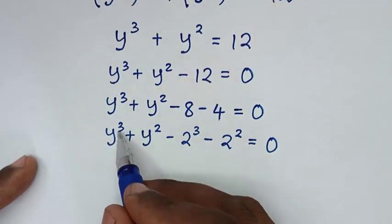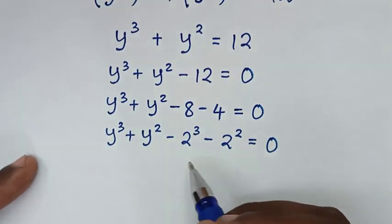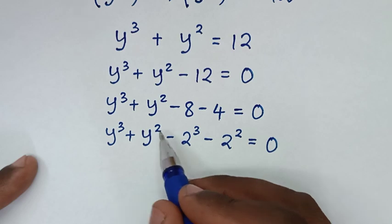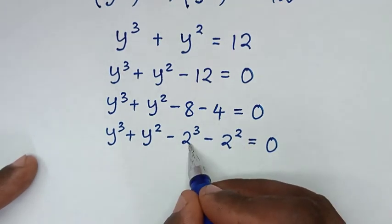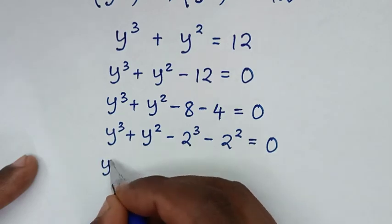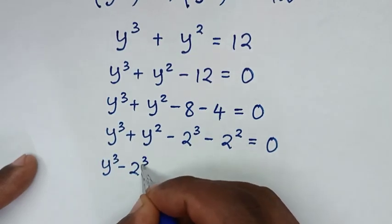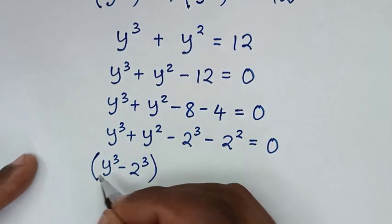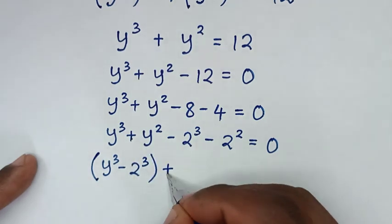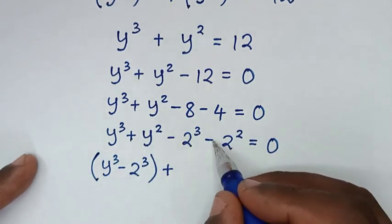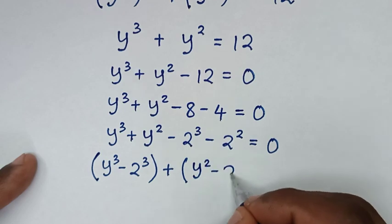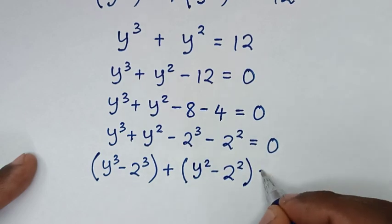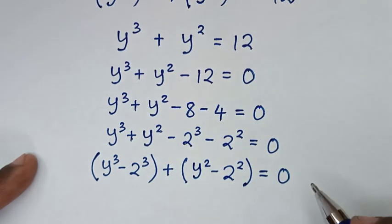Then we'll group like-powered terms together. So we have y to the power of 3 minus 2 to the power of 3, placed in a bracket, then plus y to the power of 2 minus 2 to the power of 2, in another bracket, is equal to 0.